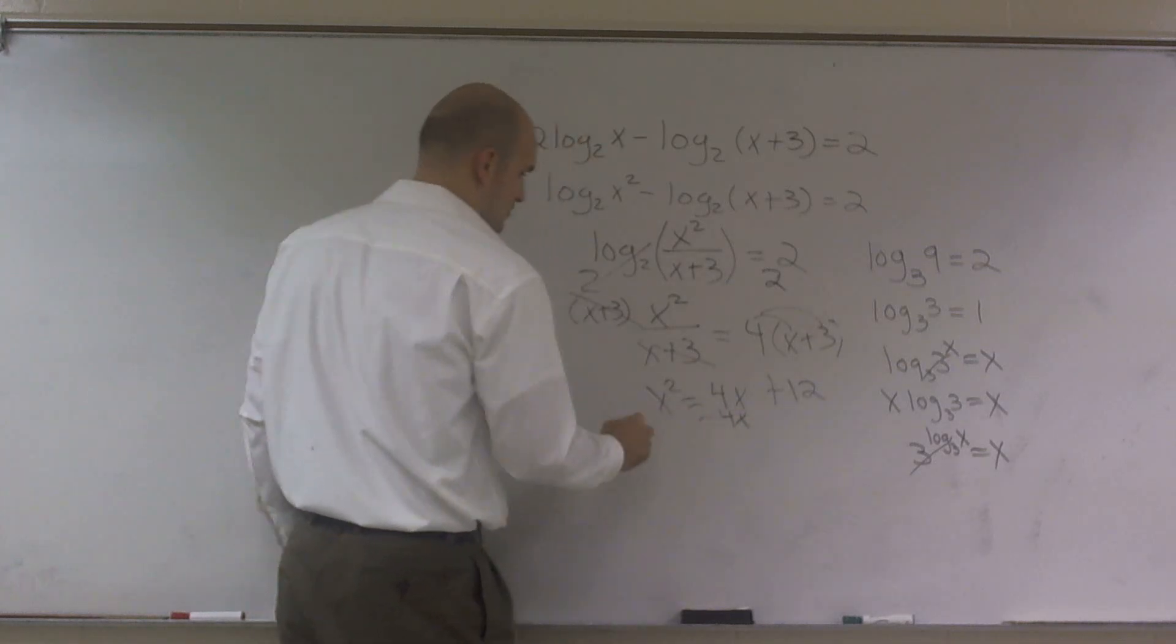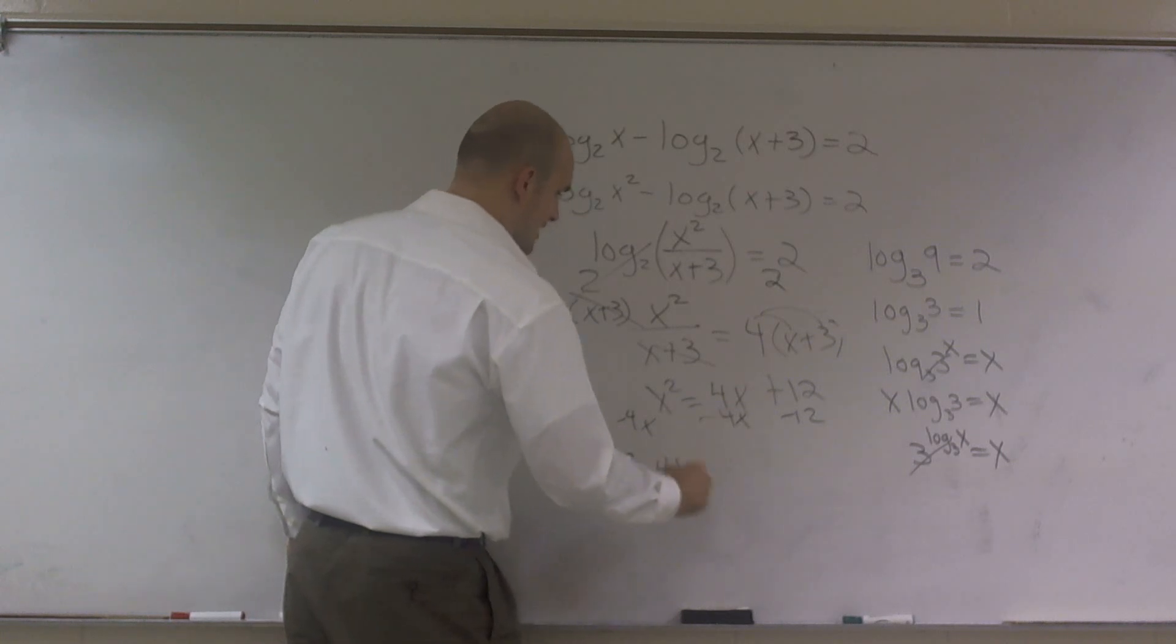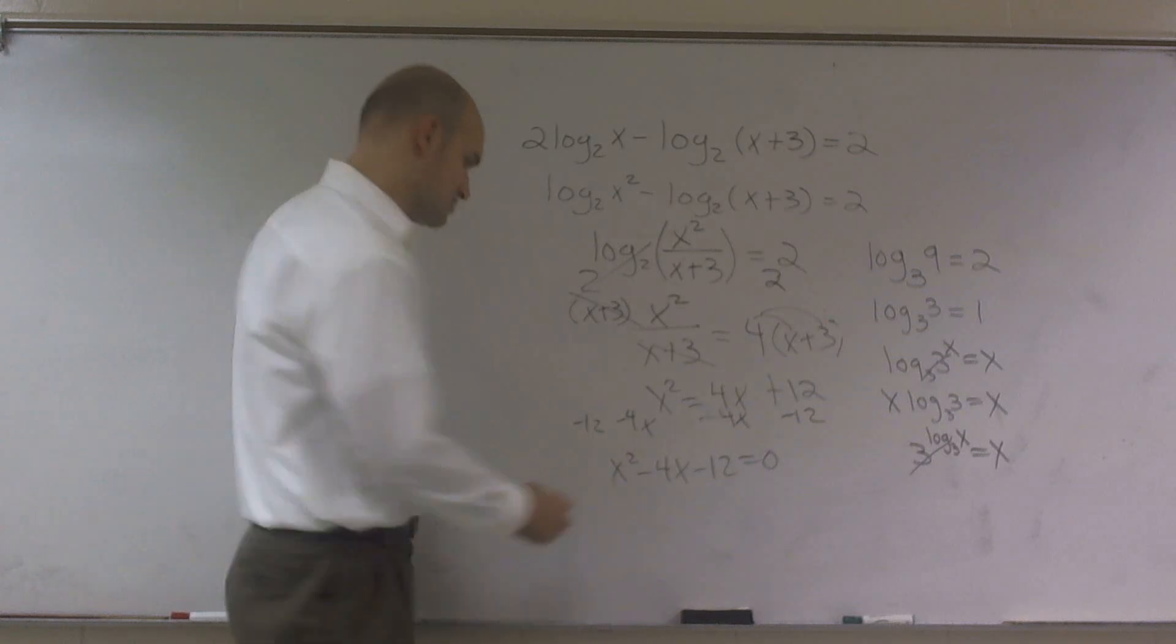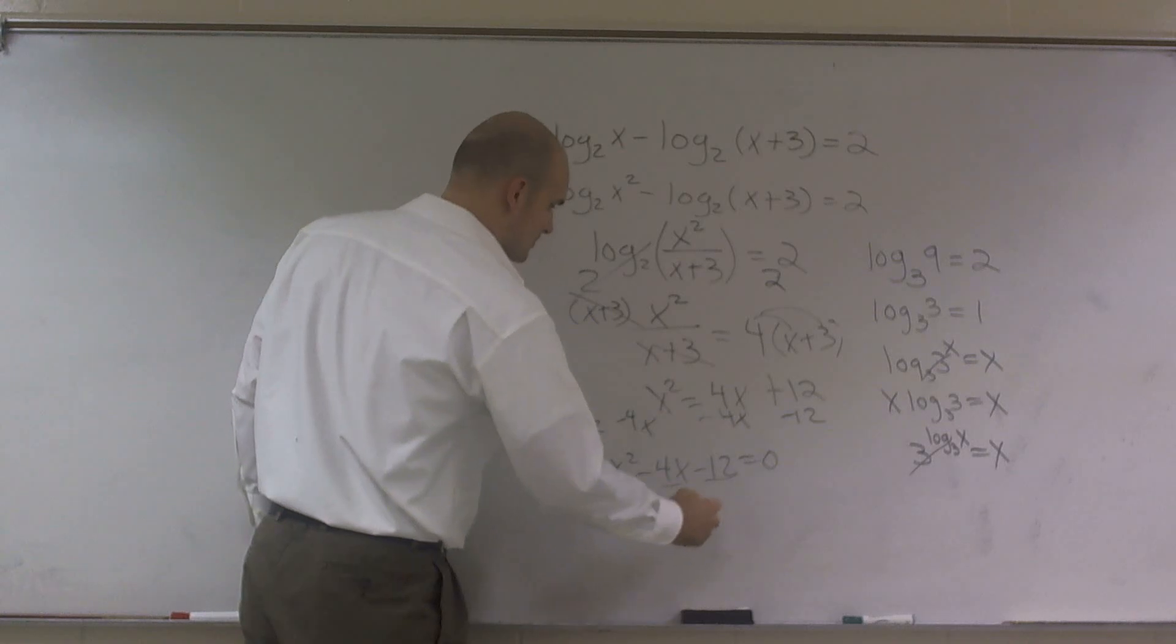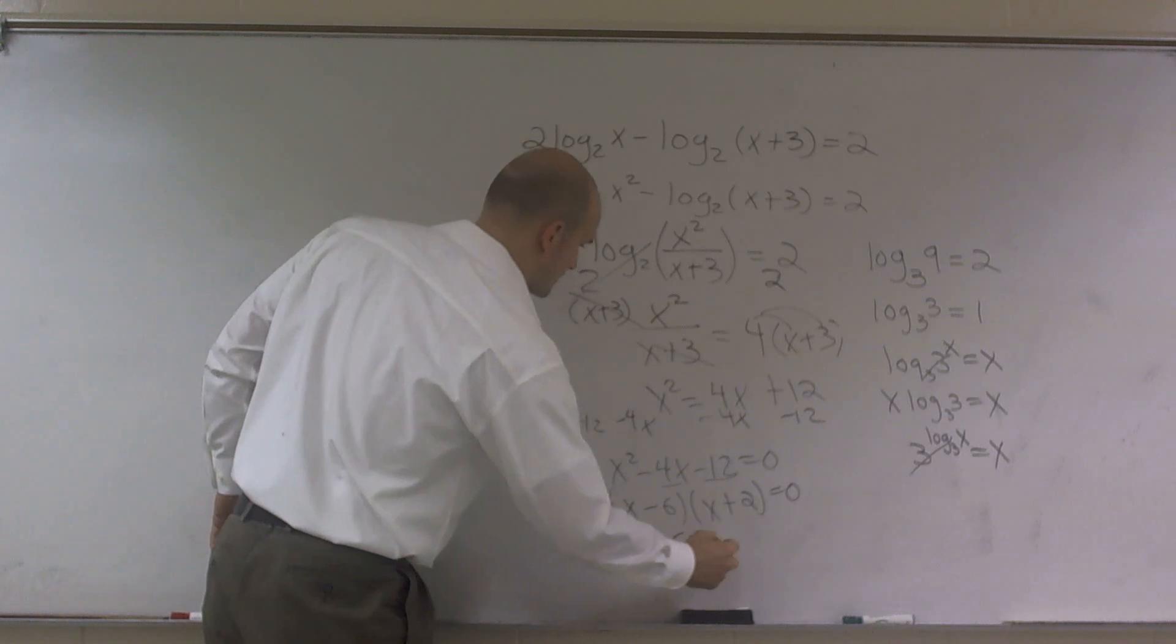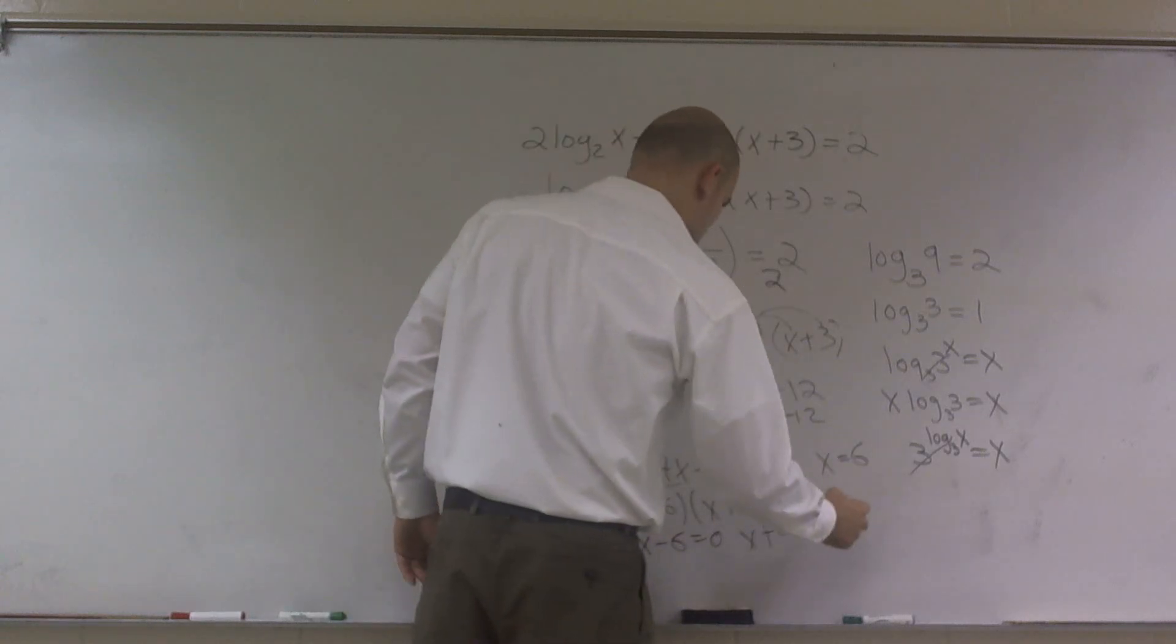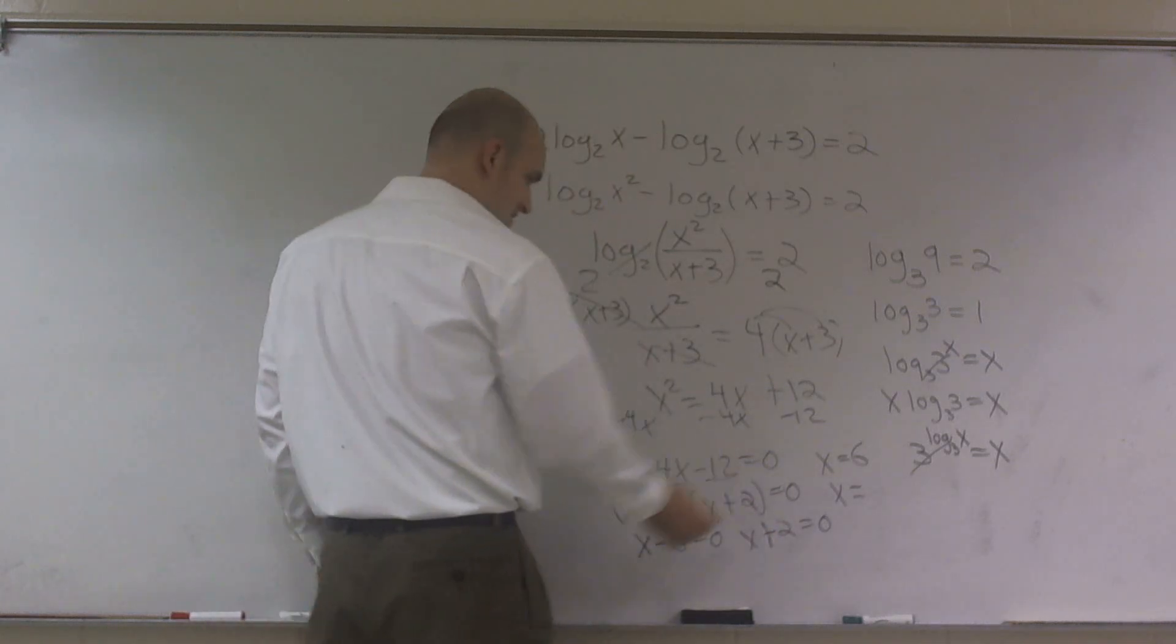So what I'm going to do is I'm going to subtract the 4x onto both sides. Then I'm going to subtract the 12 onto both sides. So therefore, I'm left with x squared minus 4x minus 12 equals zero. And then I say, can I factor this any further? And you say, yes. The two factors for this would be x minus 6. So the two numbers that multiply to give you negative 12, but add to give you a negative 4. So x minus 6 and x plus 2 equals zero. So since these two numbers, or these two factors, multiply to give me zero, I can set them both equal to zero and say that x is equal to 6 or x is equal to a negative 2.